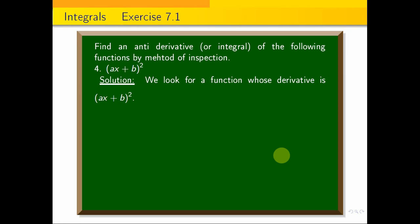This is the method that for any antiderivative, when a function is asked, we are supposed to find for what function, if we are differentiating, we will get this (ax + b)².